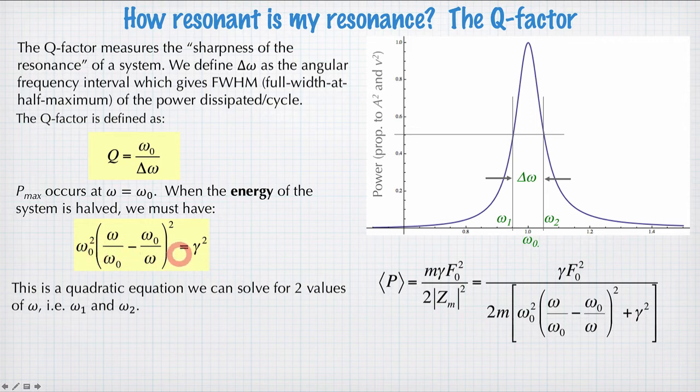So to solve this equation, in fact it's just a quadratic equation, and we find values for ω₁ and ω₂.